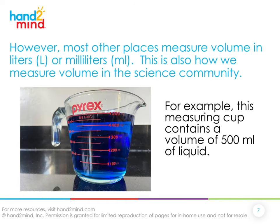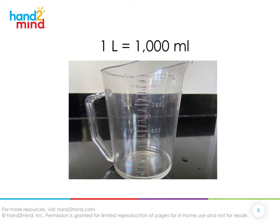However, most other places in the world measure volume in liters or milliliters, and this is also how scientists like to measure volume. For example, this measuring cup contains a volume of 500 milliliters. There are conversions we can make: one liter contains 1,000 milliliters. A measuring cup may show 1,000 milliliters on one side and one liter on the other — they're the exact same thing. So one milliliter is much smaller than one liter.